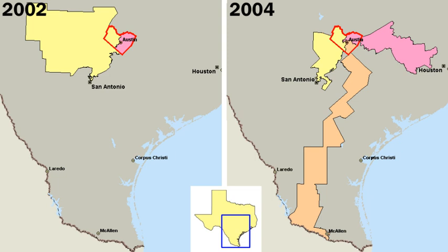Like the federal government, state governments have three branches — executive, legislative, and judicial. The chief executive of a state is its popularly elected governor, who typically holds office for a four-year term, although in some states the term is two years. Except for Nebraska, which has a unicameral legislature, all states have a bicameral legislature, with the upper house usually called the Senate and the lower house called the House of Representatives, the House of Delegates, Assembly, or something similar.